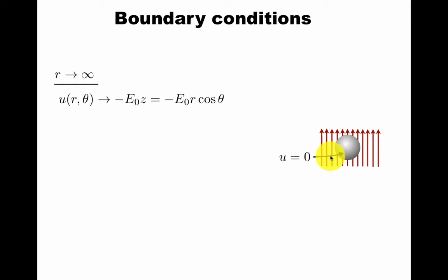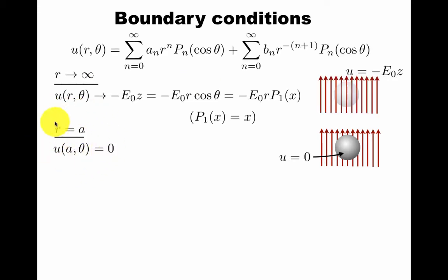How do you impose boundary conditions now if you have a solution? Here's a physical problem. Put the electrical potential on a perfect conductor to zero on this sphere, and at infinity demand that there's a homogeneous electric field.